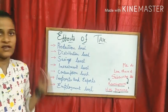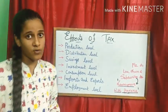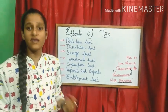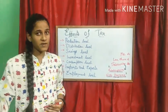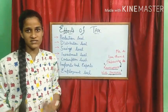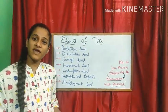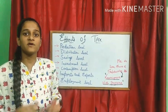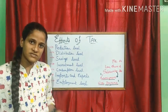Then, saving level. If the tax is more on all the commodities, we may save less money, or we may not save money at all because we have to pay more money for purchasing goods and services. Moving to investment level — when the tax rate is more, saving will decrease because we spend all our money to purchase goods and services.